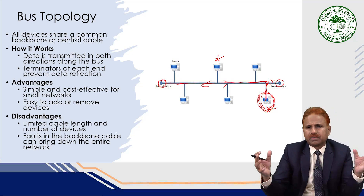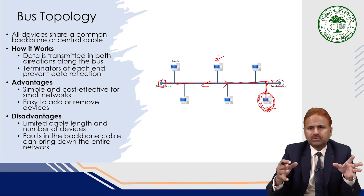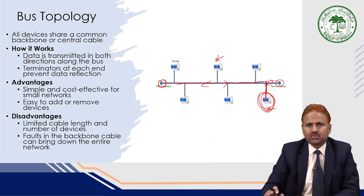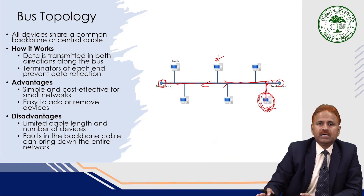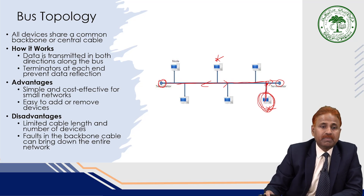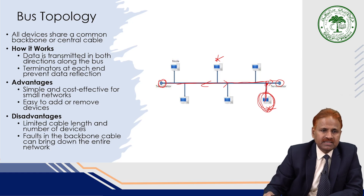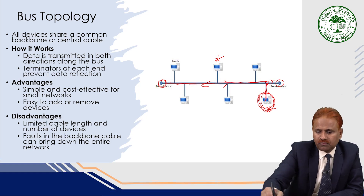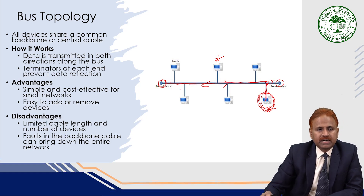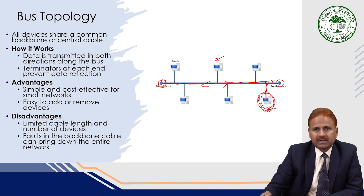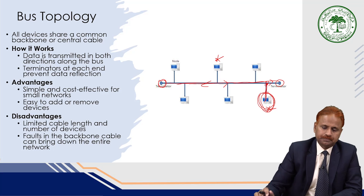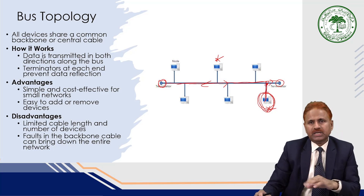Bus topology is simple and cost effective for small networks — if you want to set up a network for 30 or 40 computers in a lab or office, it is an easy way to connect them. It is easy to add or remove devices. The limitations are that it is limited in cable length and number of devices, and a fault in the backbone cable will adversely affect the entire network.